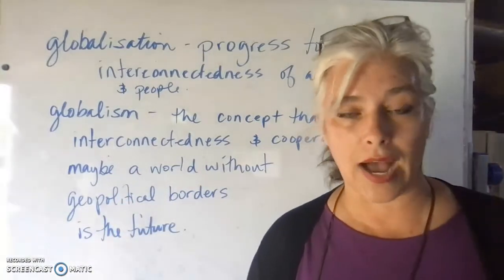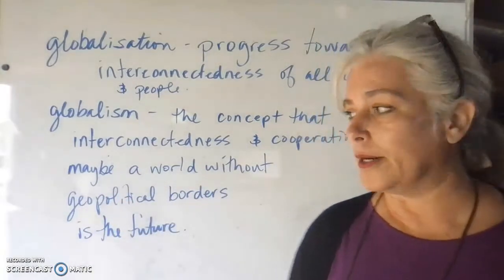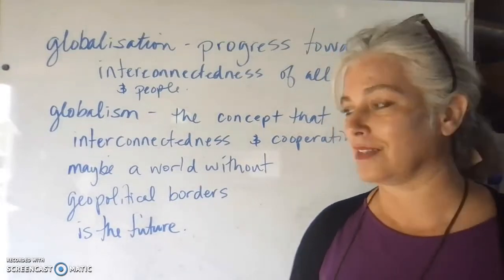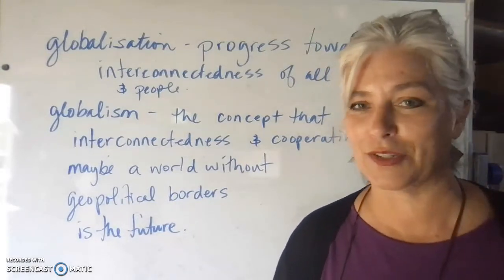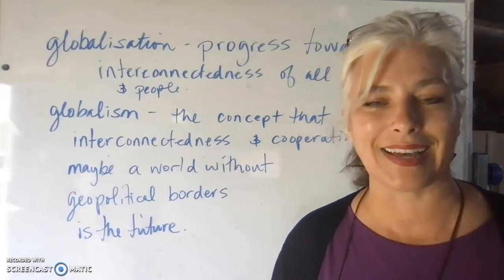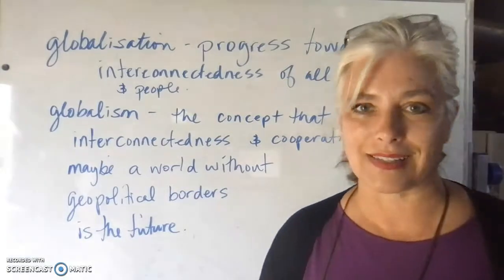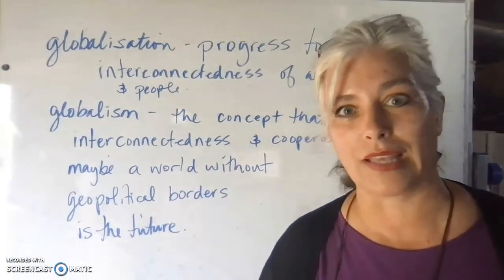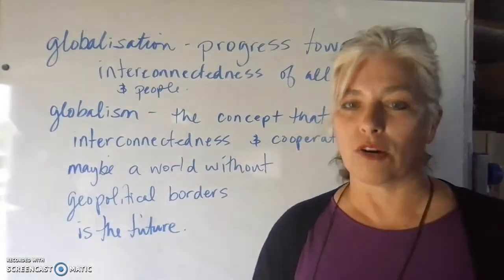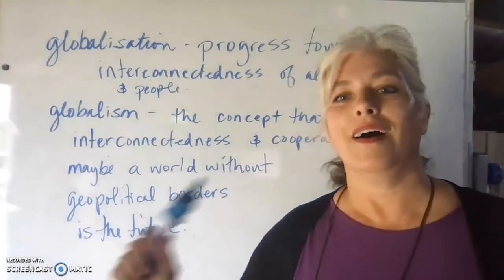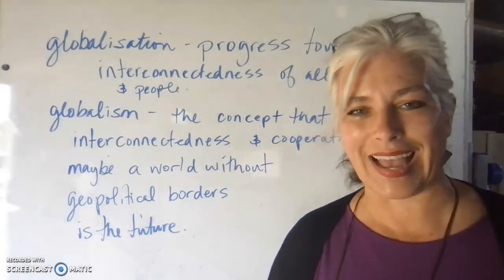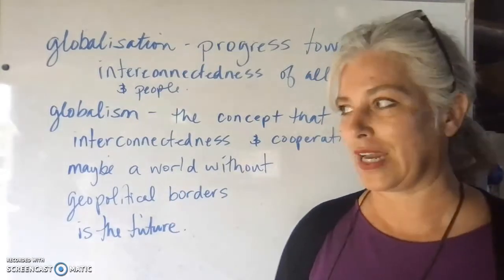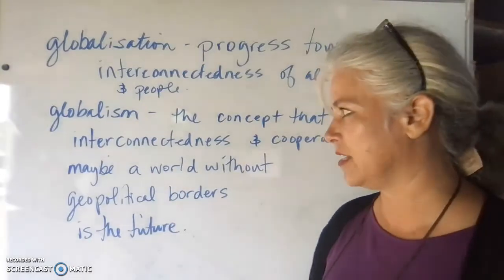These borders change over time — they morph all the time, and some people fight over them. Back to the Ukraine and Russia conflict: Russia wants part of Ukrainian territory, and the Ukrainians say no. So there's a lot of talk about globalism, globalization, geopolitical disputes in the world today — monetary systems, food systems, like I mentioned.